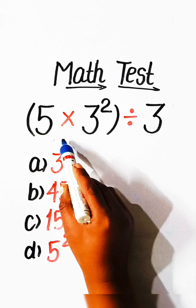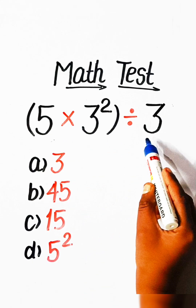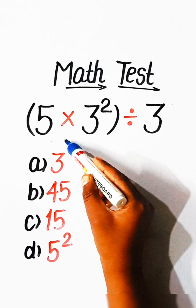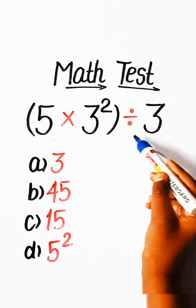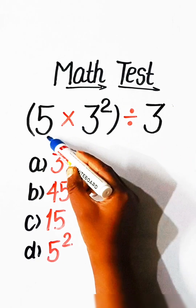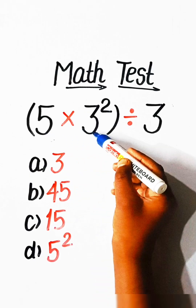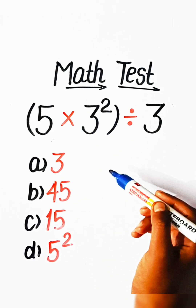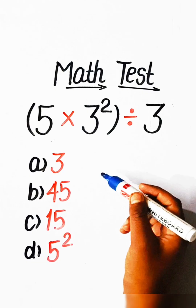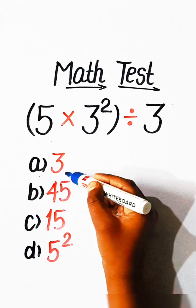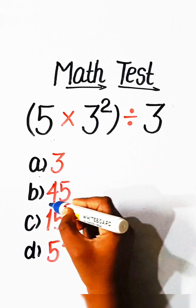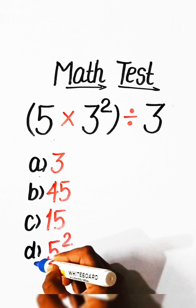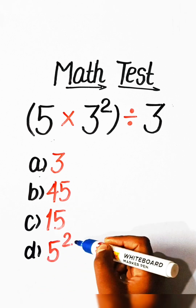Hello everyone, welcome back to my YouTube channel. In this video we will solve this basic math equation: 5 multiply by 3 squared divided by 3 equals to what? Option A: 3, Option B: 45, Option C: 15, or Option D: 5 squared.